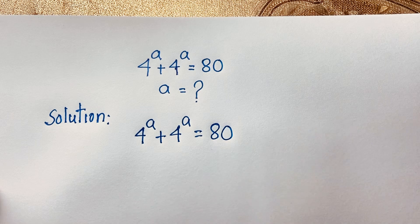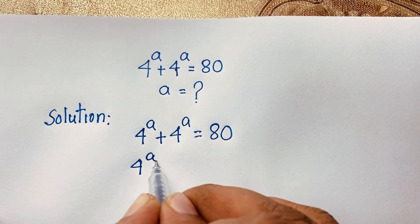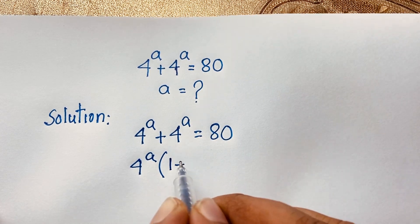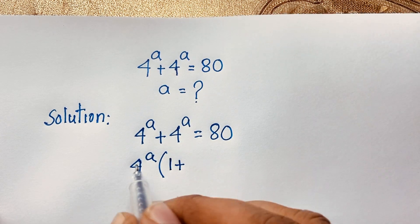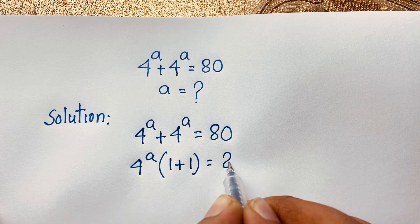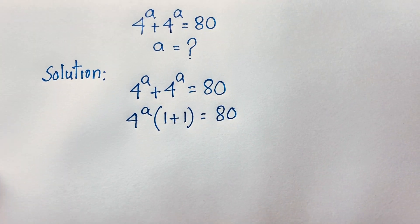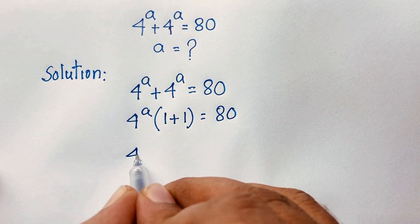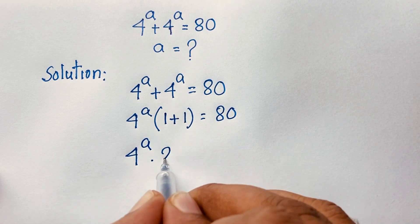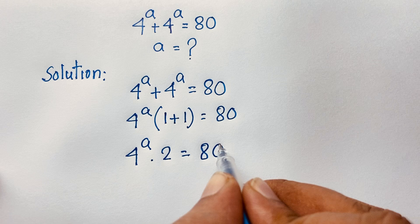Now, you can see easily here 4 to the power A is common. So, factoring it out: 4 to the power A times (1 plus 1) is equal to 80. So 4 to the power A times 2 is equal to 80.